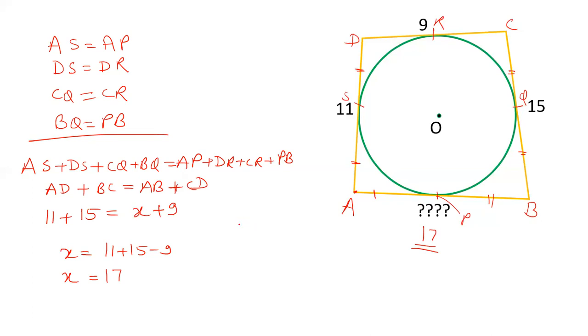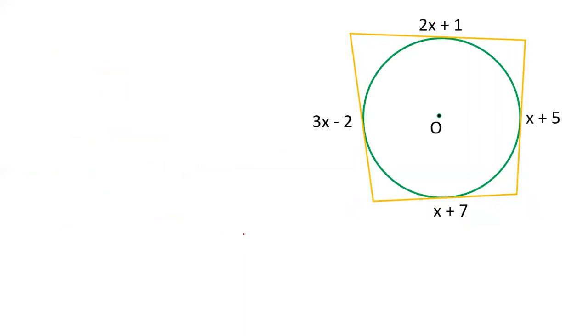Now let's check one more question where there are variables. We have just seen that the sum of opposite sides are equal. So if I name these sides A, B, C, and D, the value of AB plus CD equals AD plus BC.